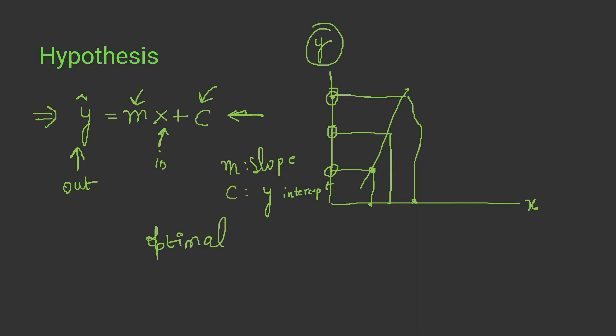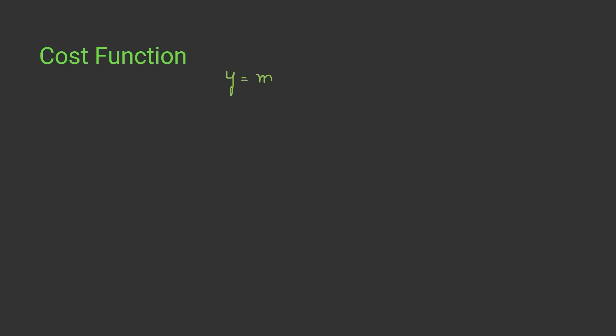The question arises: what does it mean to have optimal values of m and c? You could have any values of m and c, but what makes them optimal? Let's understand the cost function first. When we start training our model, we have the input values and we give any random values to m and c.